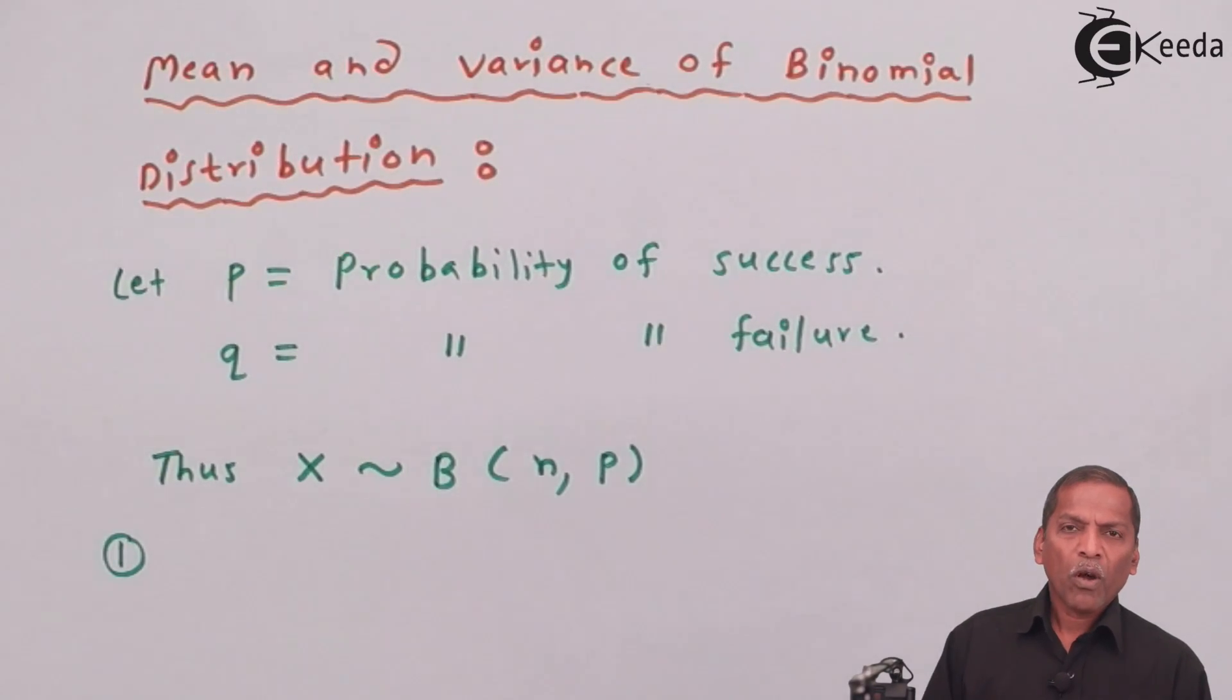Now, the mean of binomial distribution is given by E(X) = μ = nP.